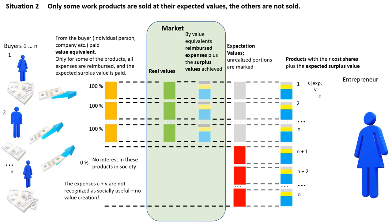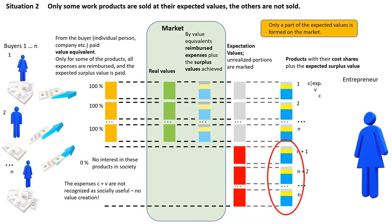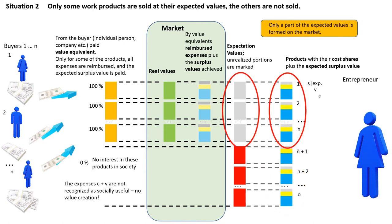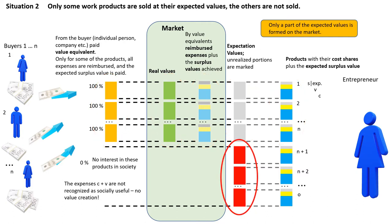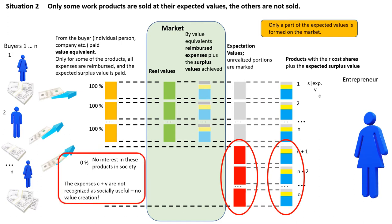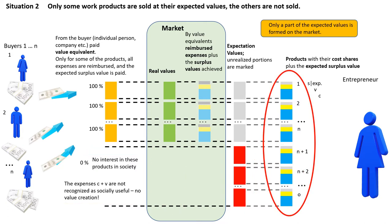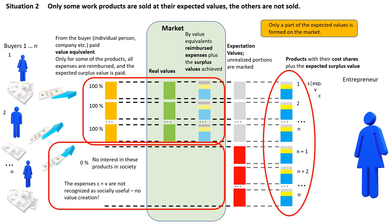This example is based on the previous illustration. In contrast to it, three of the work products cannot be sold. The expected values of all products that are sold are completely achieved as real values — all expenses for these products are fully accepted, as is the expected surplus value. The expected values of the unsaleable products cannot even partially be converted into real values; they are completely marked with red as not-achieved values. The expenditures made for these are not recognized as socially useful and therefore also not recognized as value-creating. This makes it clear that human work alone cannot be the criterion for value creation; it is also important to recognize the work results as socially useful, as valuable for society.